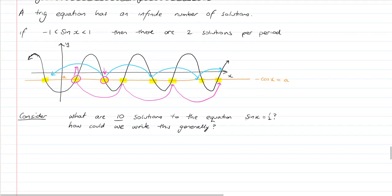So what are the ten solutions to the equation sin x equals a half, and how could we write this generally, is the question. If we go through the sin x equals a half process, really quickly we get sin inverse of a half, and we get x is equal to π/6, which is 30 degrees.